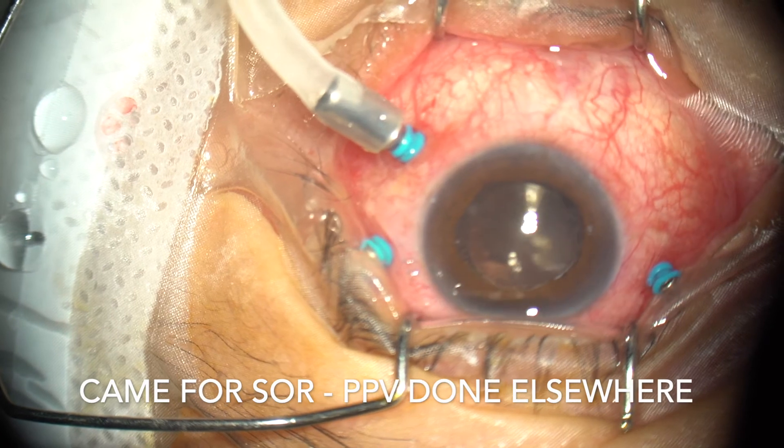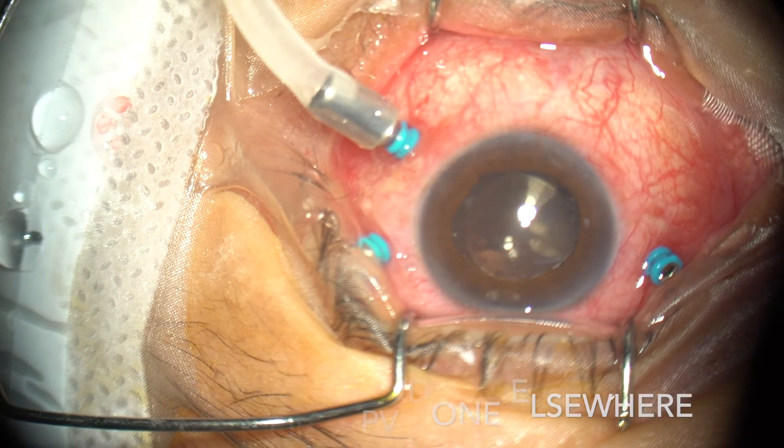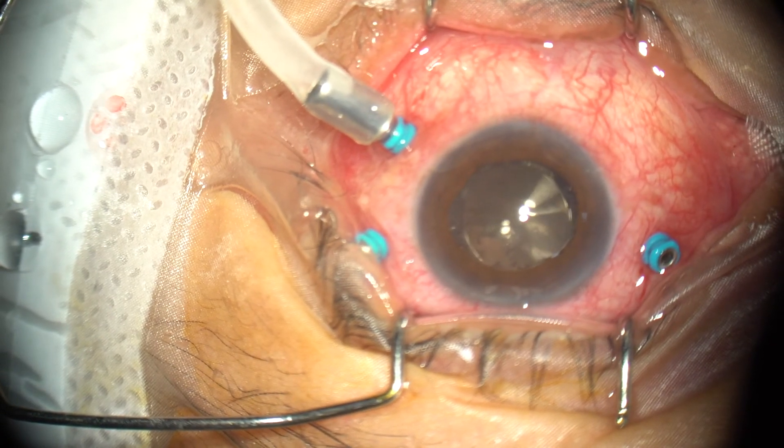This patient was operated for vitreoretinal surgery for retinal detachment. On examination, the vision was 5/60, and there was a dense adherent epiretinal membrane causing traction on the macula. The macular thickness was 500 microns, and the membrane was surrounding most of the optic disc as well.